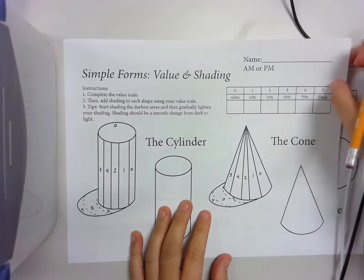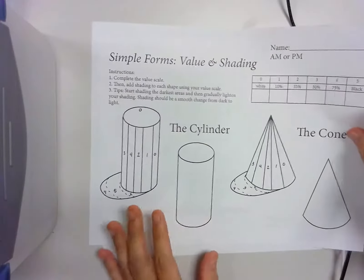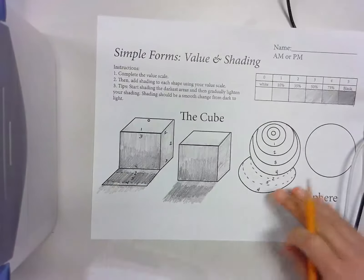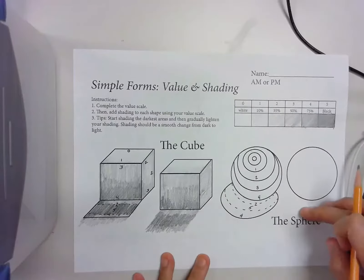This is a two-sided sheet. On one side, there's a cylinder and cone. On the other side, there is a cube and a sphere. I'm going to start off with a cube.